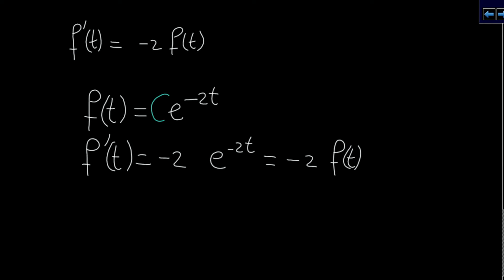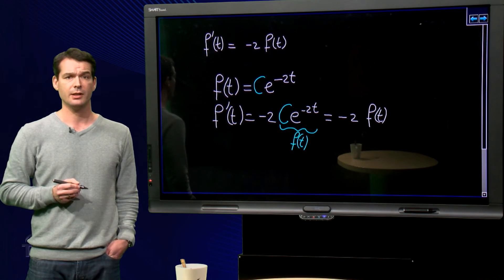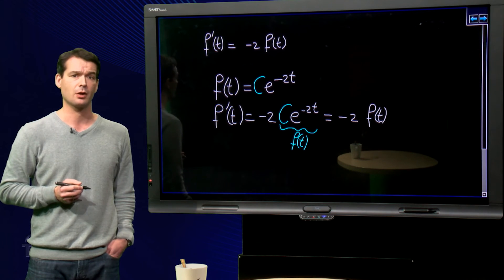f'(t) is minus 2 times c times e to the power minus 2t. This here is exactly f(t) again, so we get minus 2 times f(t). So we have infinitely many solutions, c times e to the power minus 2t for any constant c.